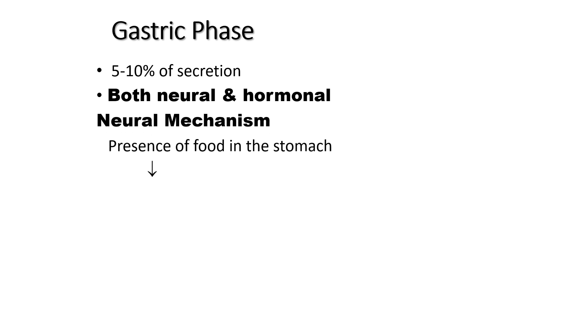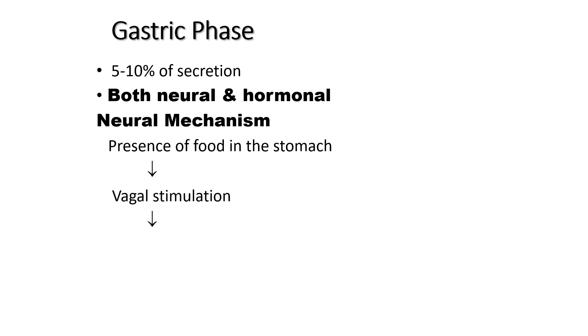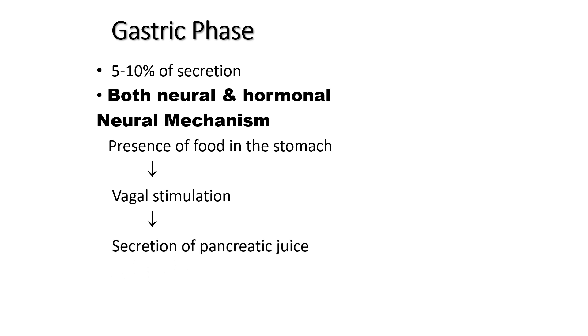The gastric phase is controlled by both neural and hormonal mechanisms. In the neural mechanism, the presence of food in the stomach stimulates the vagus nerve, which increases the pancreatic secretion.